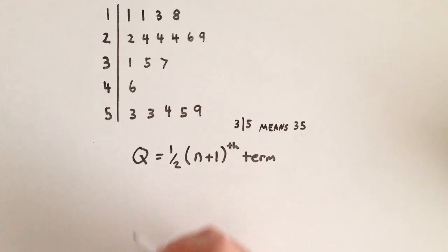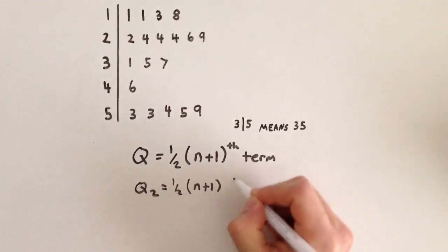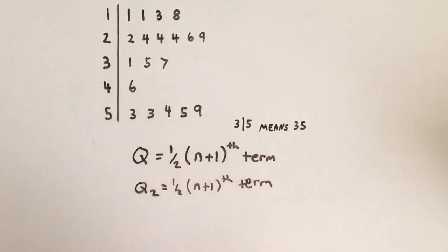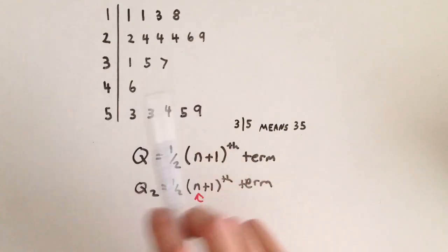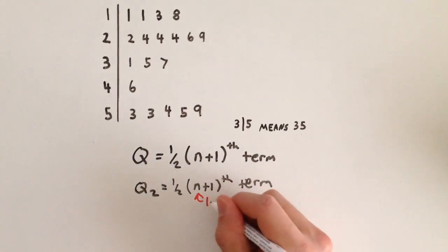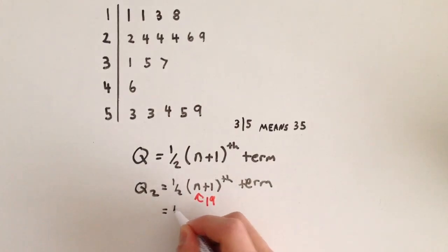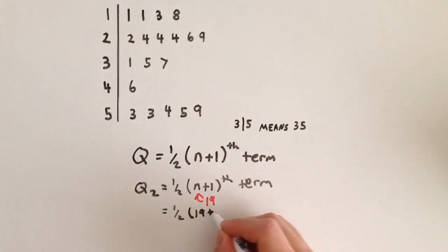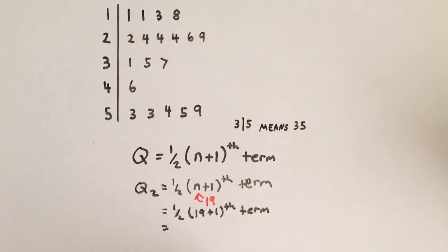Let's find the median, or Q2. Q2 equals one half of (n plus 1)th term. When finding Q2, n stands for the number of data values in your whole set. Counting all the data values in this example gives us 19. Substituting in 19: Q2 equals one half of (19 plus 1)th term. 19 plus 1 is 20, times one half is 10. So we need the 10th term.